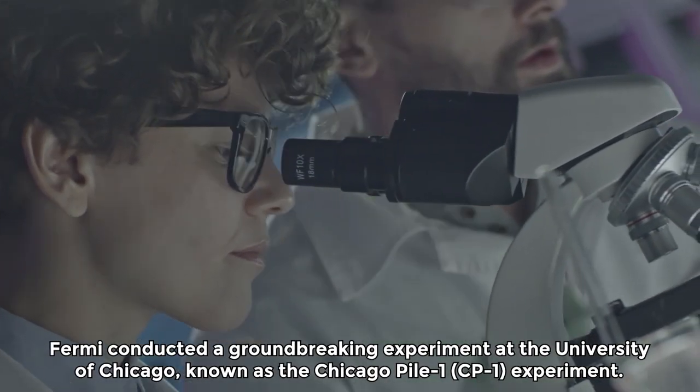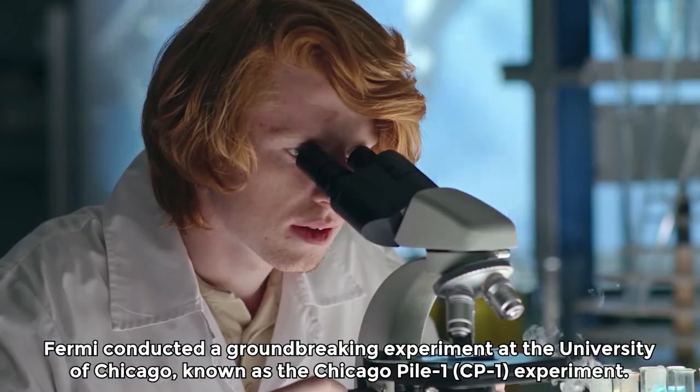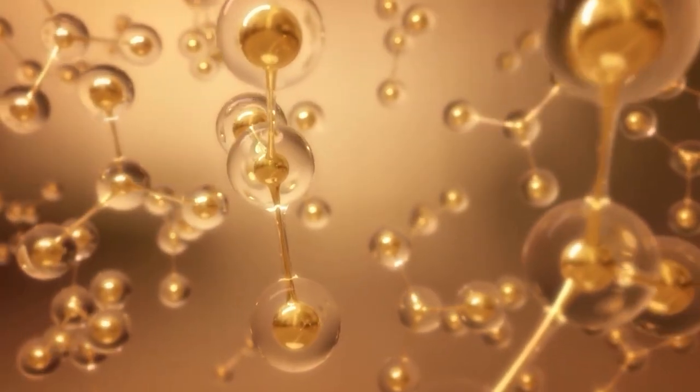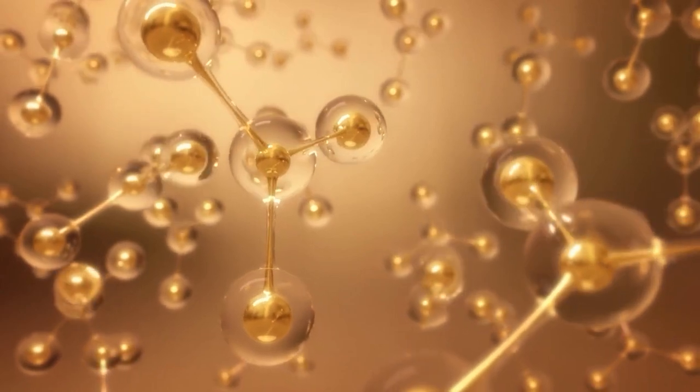In December 1942, Fermi conducted a groundbreaking experiment at the University of Chicago known as the Chicago Pile-1 or CP-1 experiment. This experiment aimed to demonstrate the possibility of a controlled nuclear chain reaction.